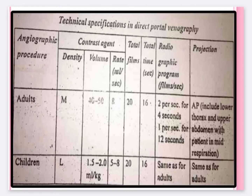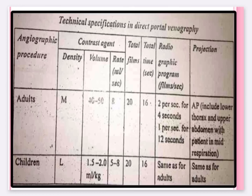Technical specifications for indirect portal venography: angiographic contrast agent, total radio-opaque projection. For adults, the procedure uses 20ml at 2ml per second. Films: 4 per second for AP projection. Field includes lower thorax and upper abdomen. Exposure time approximately 12 seconds. For children, 1 to 2 ml per kg, same parameters as adults.